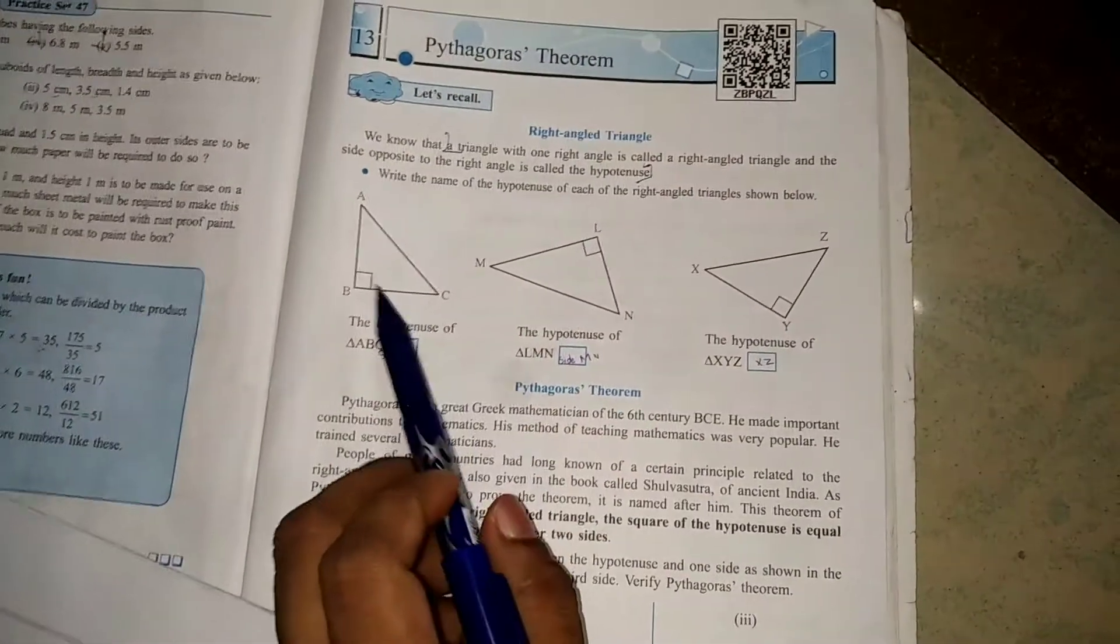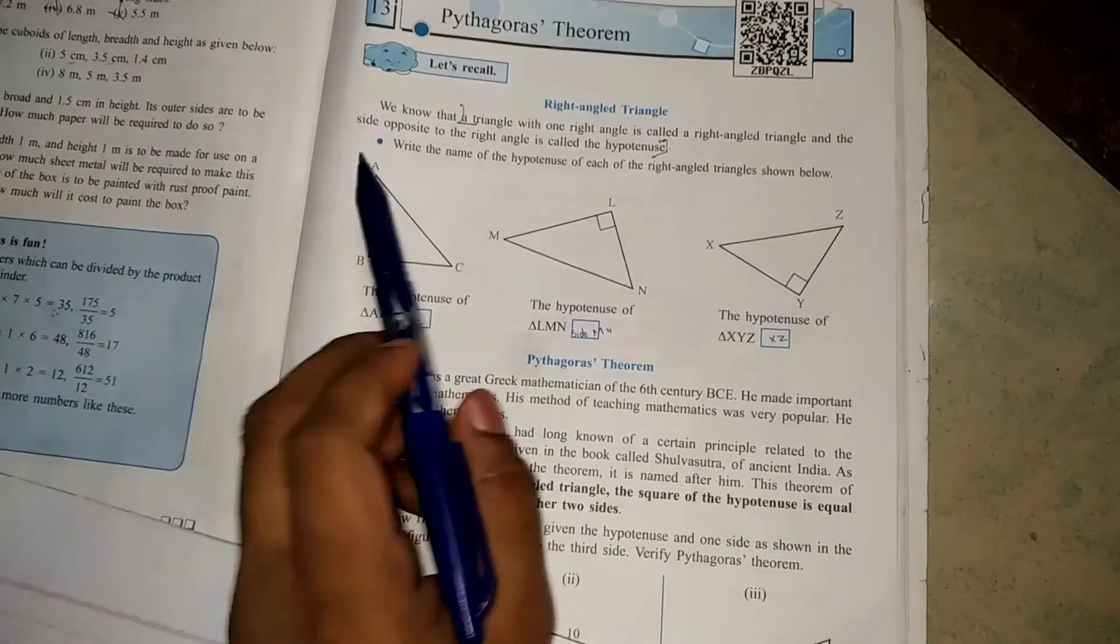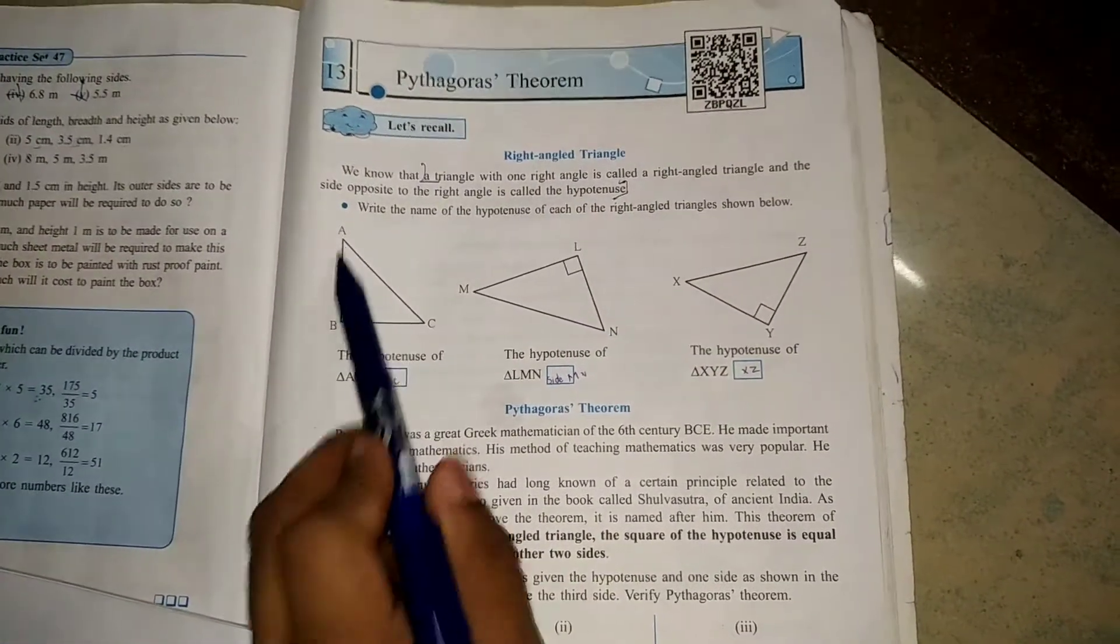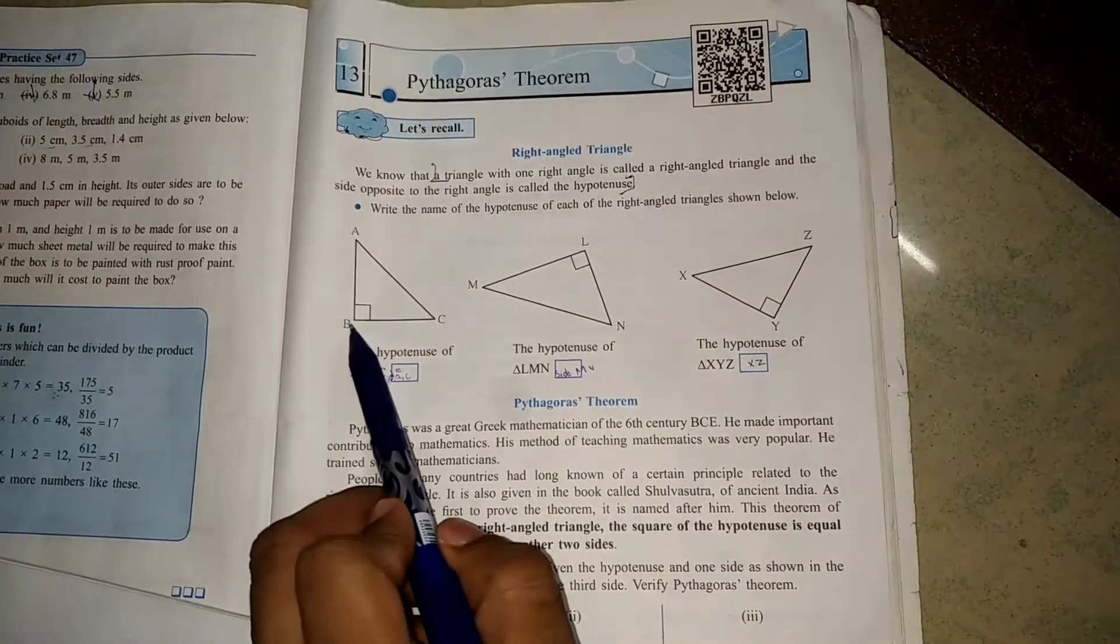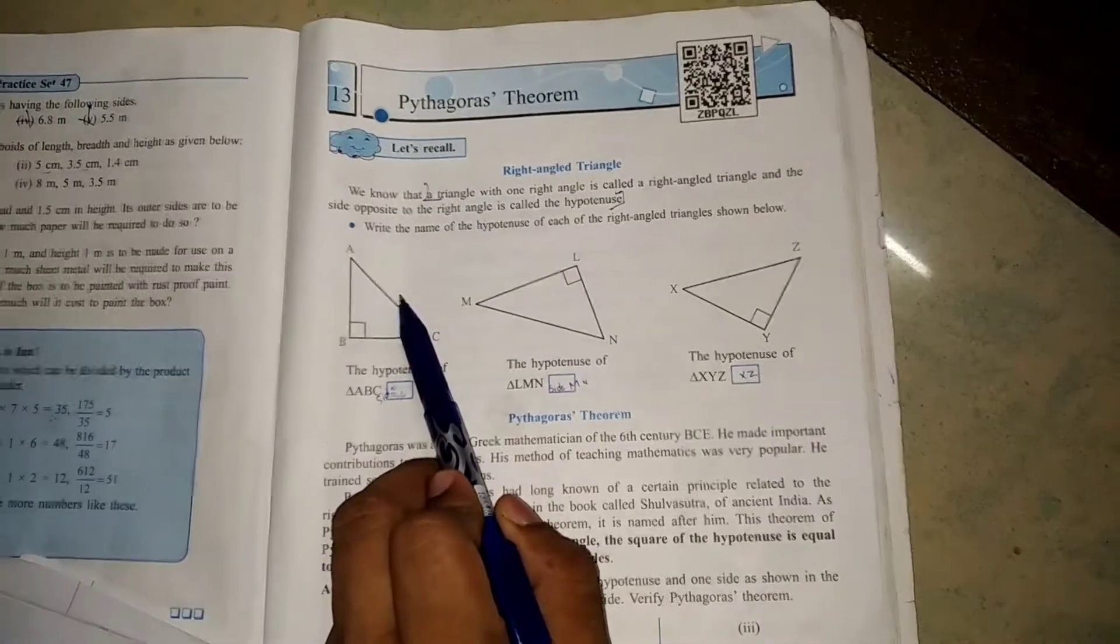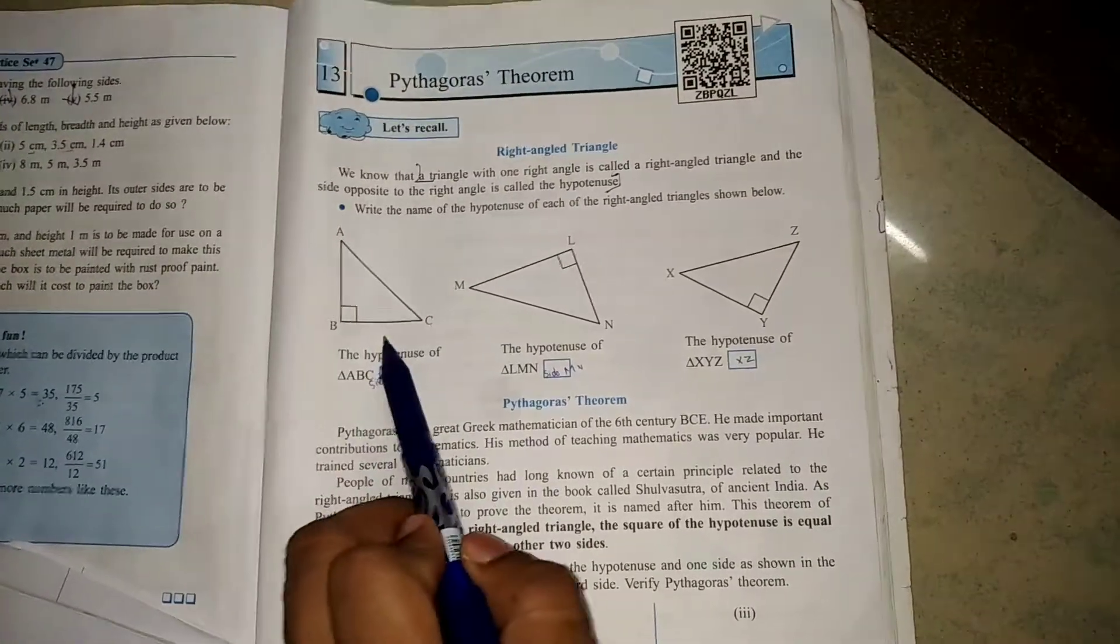First we have to remember what is the hypotenuse side. A, B, and C are the three angles. B is the 90 degree angle. AC is your hypotenuse side. This is your height and this is your base.